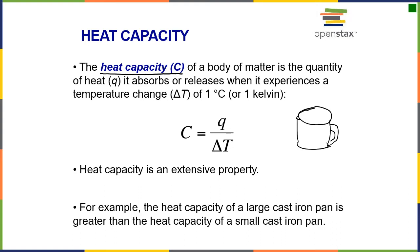Heat capacity by definition — capital C — is equal to the amount of heat it takes to get a certain change in temperature. Heat for an object is going to equal the heat capacity, how hard or easy it is to heat something up, multiplied by delta T. Different coffee cups would have a different heat capacity.